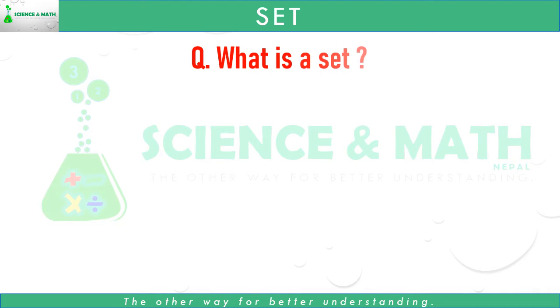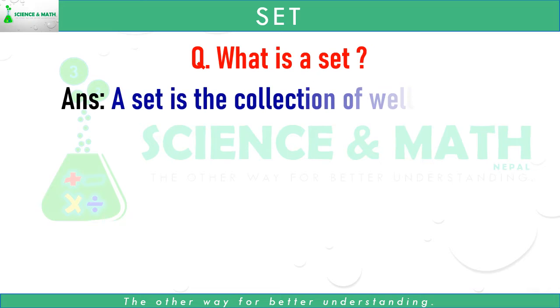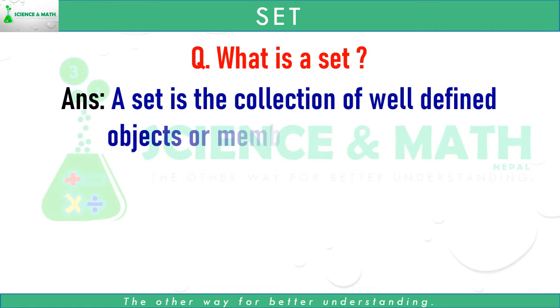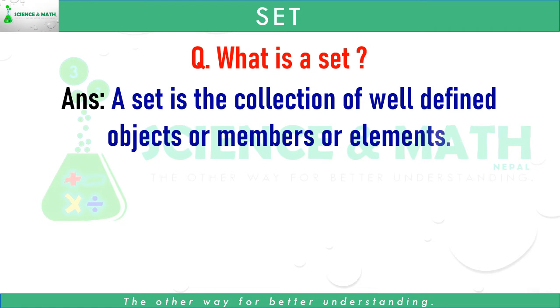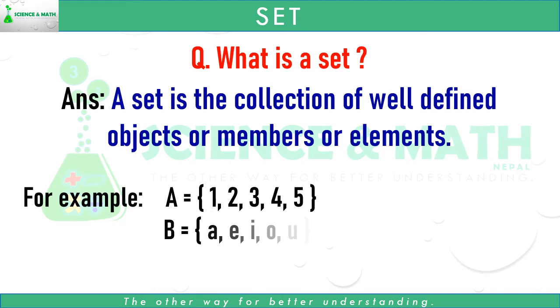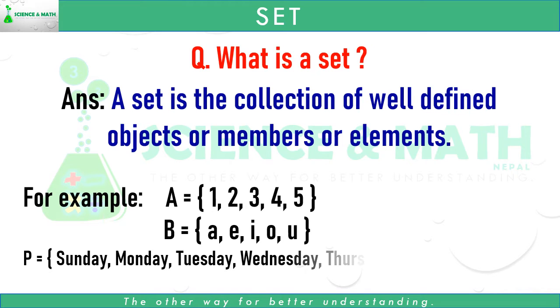What is Set? A set is the collection of well-defined objects or members or elements. For example, A equals the set of 1, 2, 3, 4, 5.